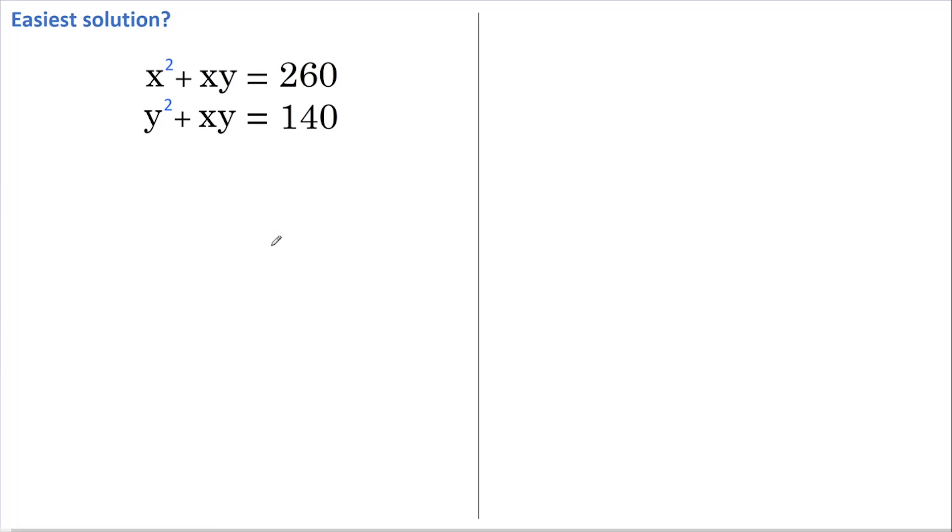Okay, this is the approach that I like, and the first thing I'm going to do is add the two equations. This gives us x² + 2xy + y² and this equals 400.